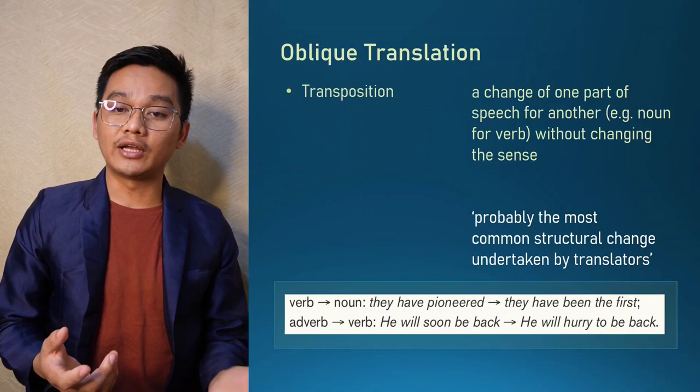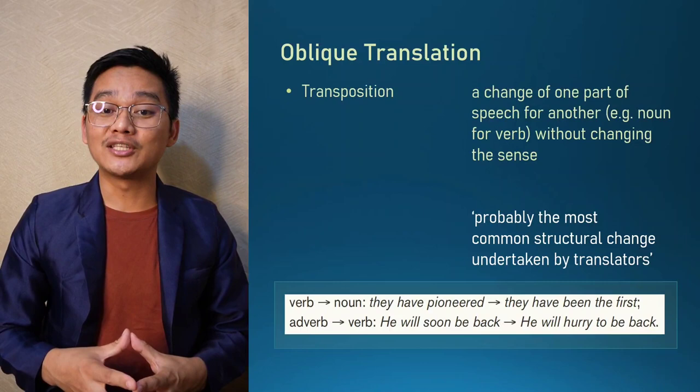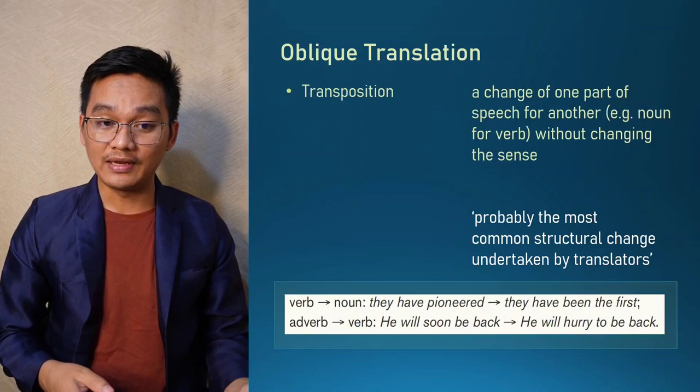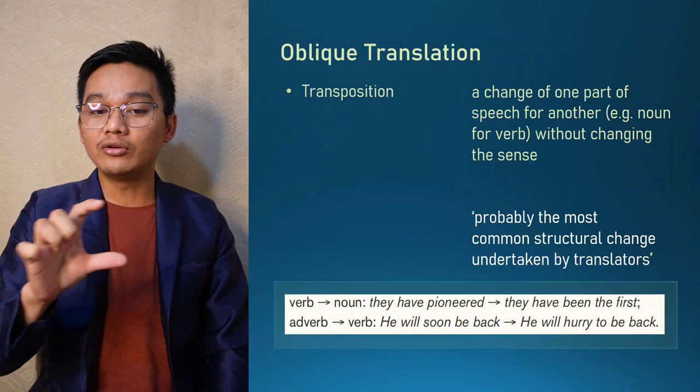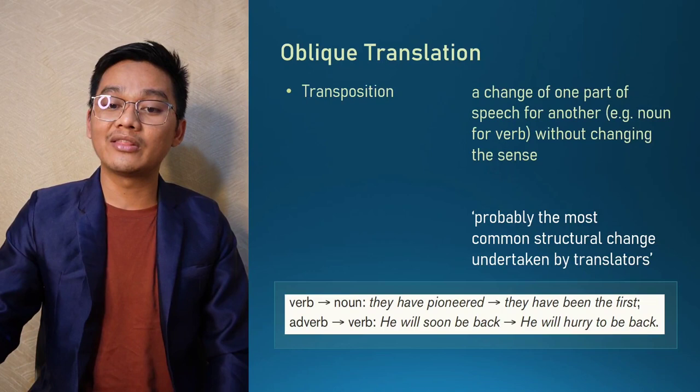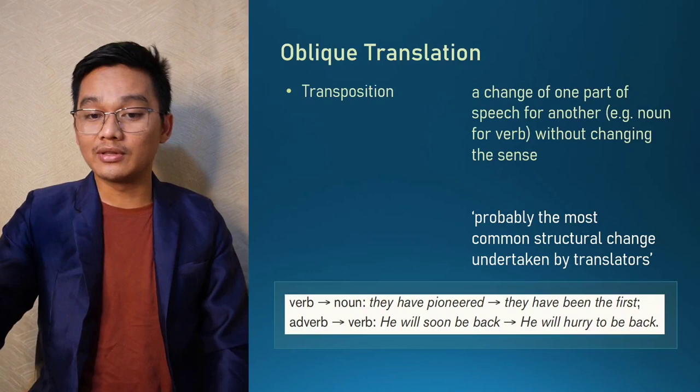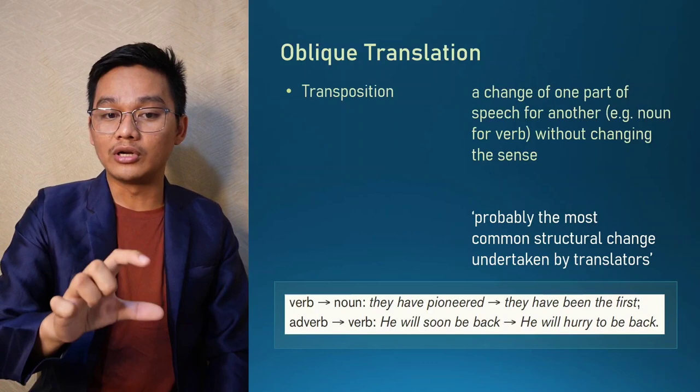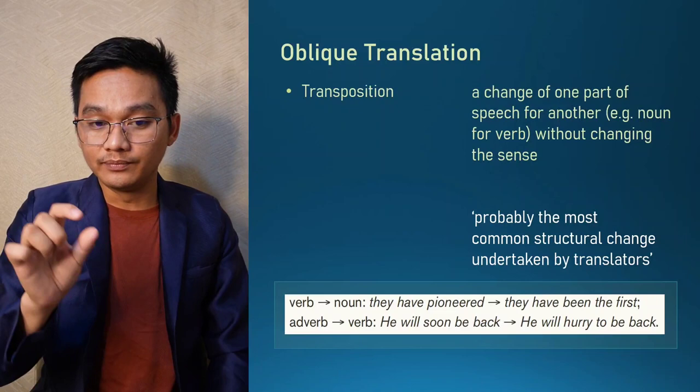Transposition is a change of one part of speech for another — for example, from a noun to a verb — without changing the meaning. It is probably the most common structural change undertaken by translators according to Vinay and Darbelnet. For example, the word 'pioneered' functions as a verb in the source text, but in the translation 'they have been the first,' the word 'first' is a noun that replaces the verb.